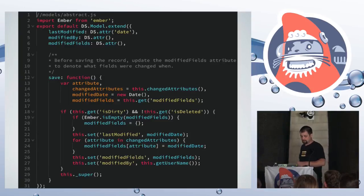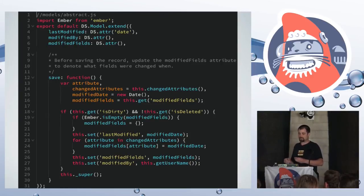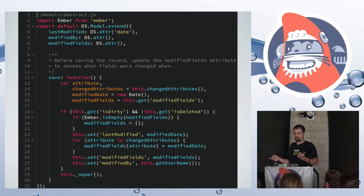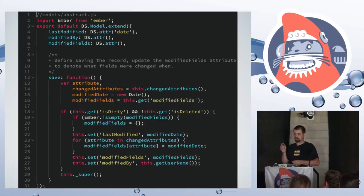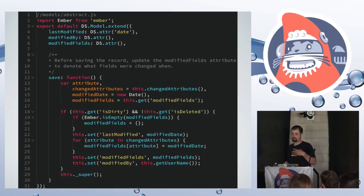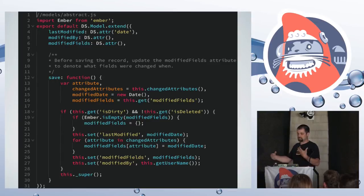Ember makes conflict resolution really easy. A pattern that works a lot of the time is to let the last change win. If user A changes the first name yesterday and I change the name today, I should win. Now if we did that at a record level we could end up overwriting non-conflicting changes, but in Ember Data we have access to changedAttributes on a record, so I can tell on each save what fields were changed.